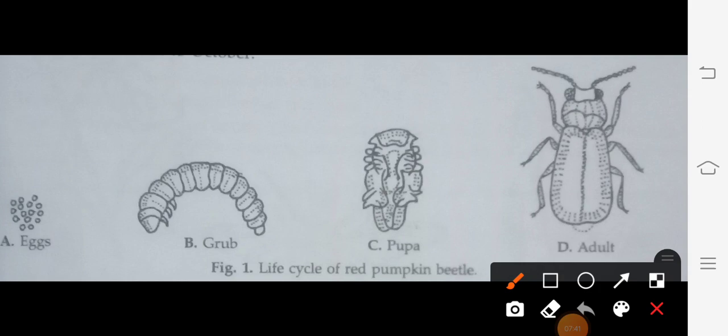After this, pupa comes into existence. This is the pupa stage. The grub pupates in smooth, thick-walled, oval, earthen chamber in the soil at the depth of about 1 cm.